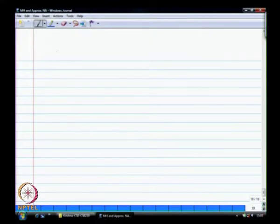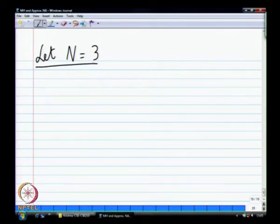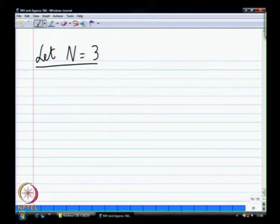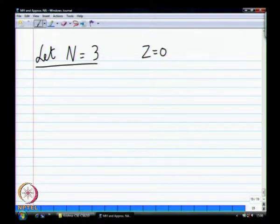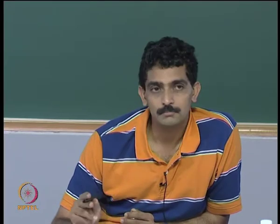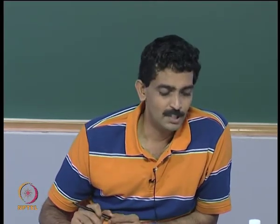Now let us assume that there are three jobs in the system — a closed network with three jobs total. What is the probability of one job in this queue, two in the other queue, and so on? Because there are three jobs and no terminal here — no thinking time, Z equals 0 — these jobs are just switching between these three queues.